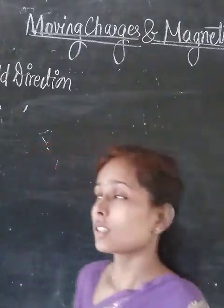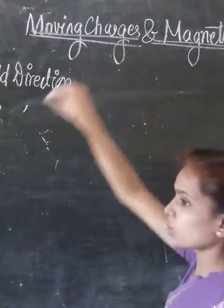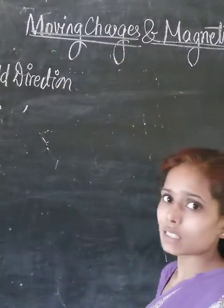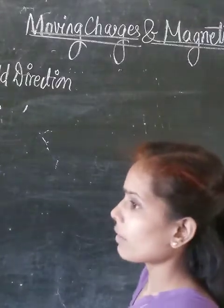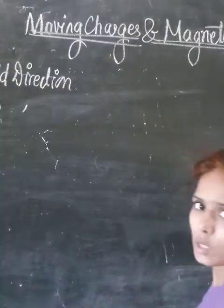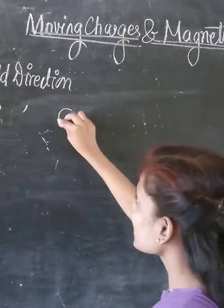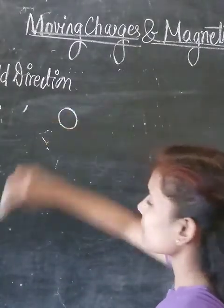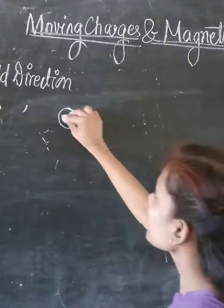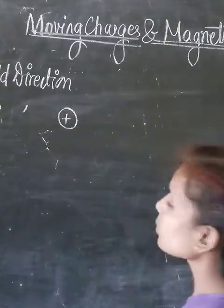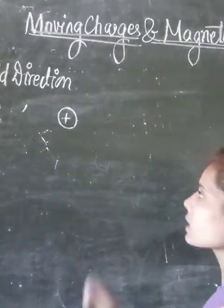Good morning class. In the last session we were learning about moving charges and magnetism. What we have learned this week is that whenever a charge is stationary or at rest, it will produce only an electric field.